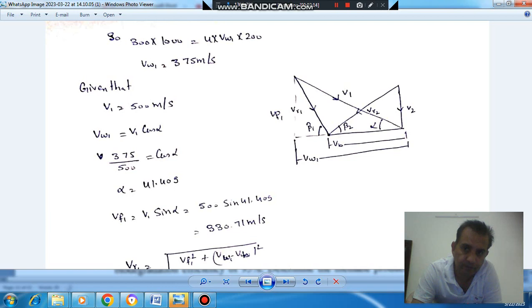And this is VR2. This is your VR1. And this is V1. So starting with V1, it will have two components VW1 and VF1. And then we subtract blade velocity from this, then we get the relative velocity at the inlet.